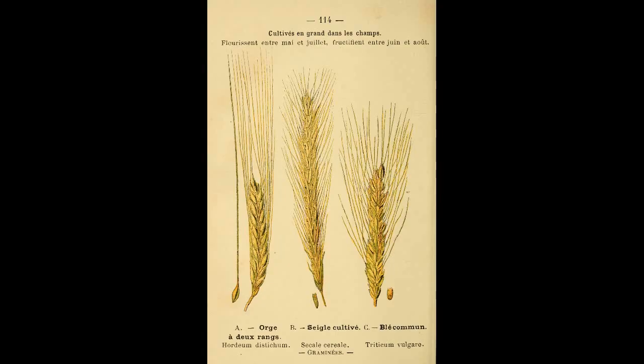Rye has limited information compared to other crops domesticated in the Neolithic era, such as peas, wheat, and barley. The main cause for this lack of information is that rye had never been found in any pre-classical site in either the Near East or Southeastern Europe, unlike wheat, peas, and barley.